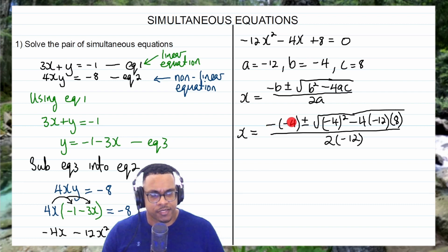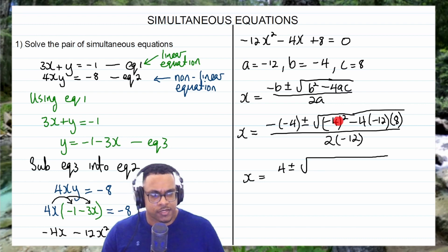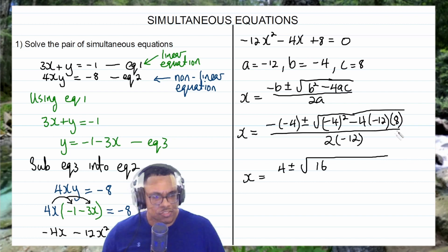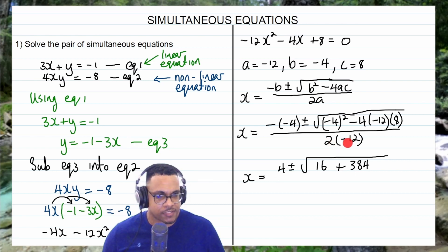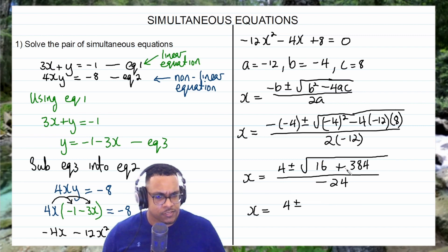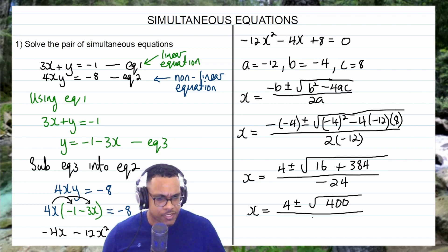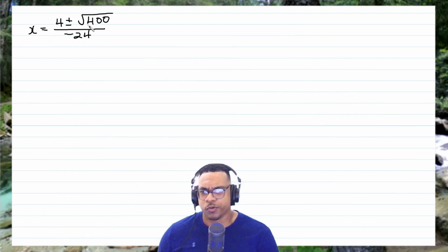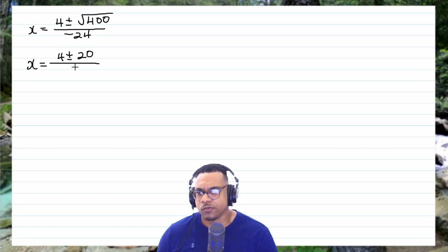Negative times negative 4 gives positive 4. Negative 4 squared gives positive 16. Negative 4 times negative 12 gives positive 48, and 48 times 8 is 384 — so positive 384. The denominator is 2 times negative 12, which is negative 24. So we have x equals 4 plus or minus the square root of (16 plus 384), all over negative 24. Since 16 plus 384 is 400, and the square root of 400 is 20, we get x equals 4 plus or minus 20, all over negative 24.